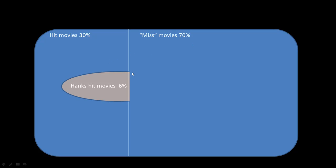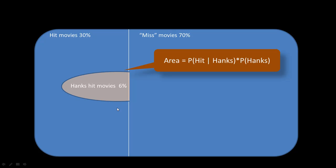In order to proceed to Bayes' theorem, let's consider the region that is the intersection of Hit movies and Tom Hanks movies, which is this part of the diagram. So we are looking at all of Tom Hanks' Hit movies. Now what I'm saying is that the area of this region can be expressed in two different ways. One way is to look at it as a proportion of all Tom Hanks movies. We can say that this area is nothing but the probability of Hit given Hanks, which is 60%.